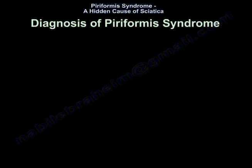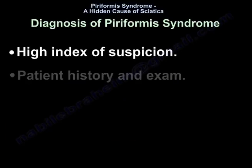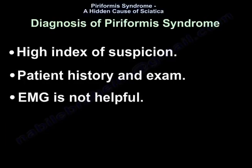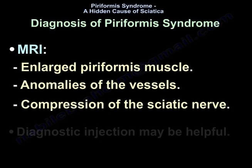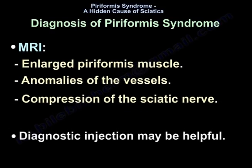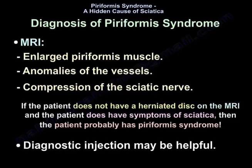Diagnosis of piriformis syndrome requires a high index of suspicion, patient history, and physical exam. EMG is not helpful. On MRI, you may find an enlarged piriformis muscle, anomalies of the vessels, or compression of the sciatic nerve. A diagnostic injection may be helpful. If the patient does not have a herniated disc on MRI but has symptoms of sciatica, then the patient probably has piriformis syndrome.